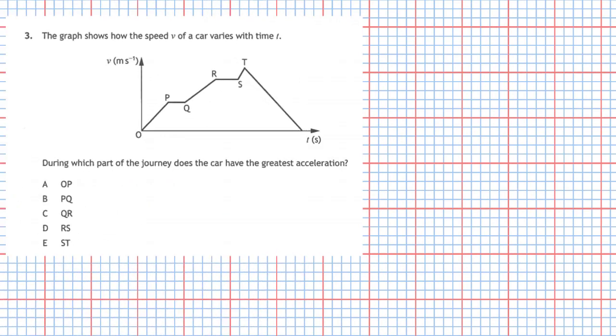Question 3 from section 1 of the 2019 National 5 examination. The graph shows how the speed v of a car varies with time t. During which part of the journey does the car have the greatest acceleration?